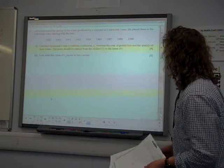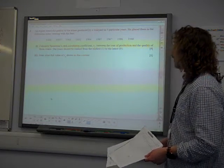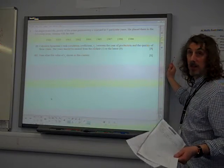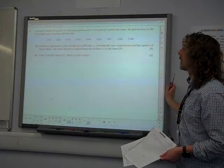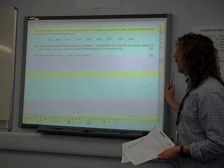An expert tested the quality of the wines produced by a vineyard in 9 particular years, and placed them in the following order, starting with the best. Starting with the best, so the best, that's the first rank one. The experiment's rank correlation coefficient between the year of production and the quality of these wines.